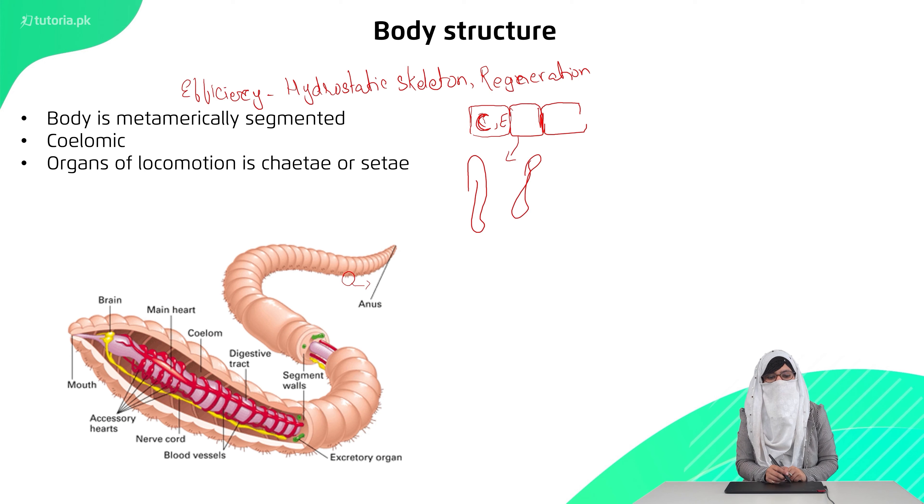This is the first organism with a closed circulatory system. It has a brain, it has a longitudinal nerve divided throughout the body. These muscles are circular muscles and longitudinal muscles. The body is flexible and can move from one place to another place.